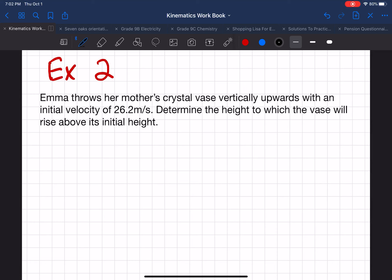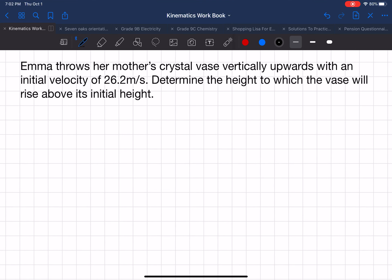So again, we're going to have to draw this problem. So the first step is always draw a diagram to help you better understand what's going on with the problem. And then we're also going to identify the known variables of this problem. So I'm going to draw Emma, and she's throwing a vase upwards.